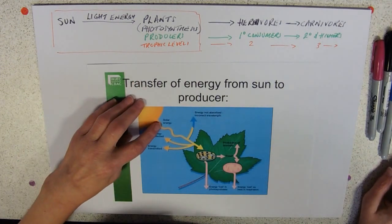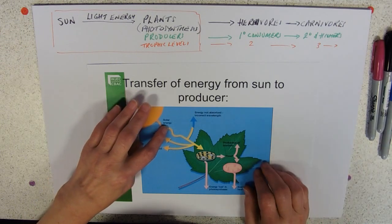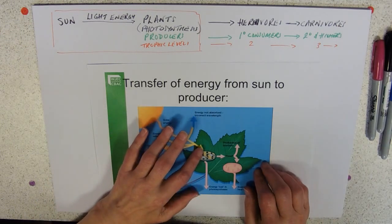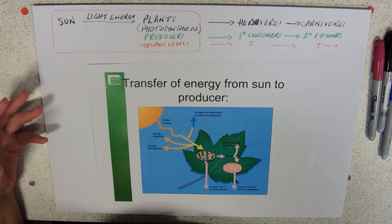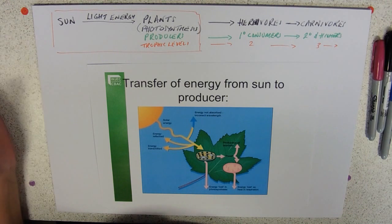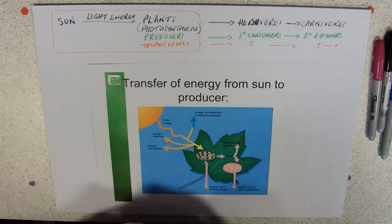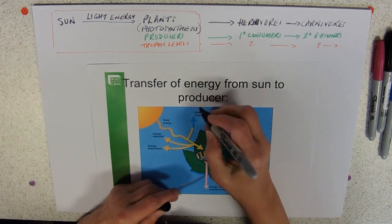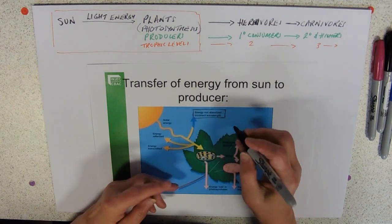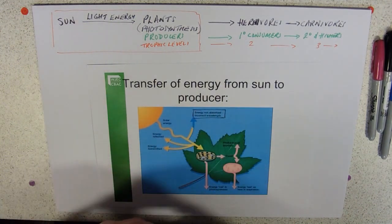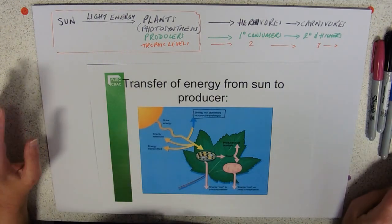Here we see a diagram representing that energy transfer. We've got our solar energy, our photons of light, coming down and hitting a leaf. But not all of that light is going to be used in photosynthesis. Some just simply isn't going to be absorbed because it's not the right wavelength. All those greens and parts of the yellow and orange are just not used.